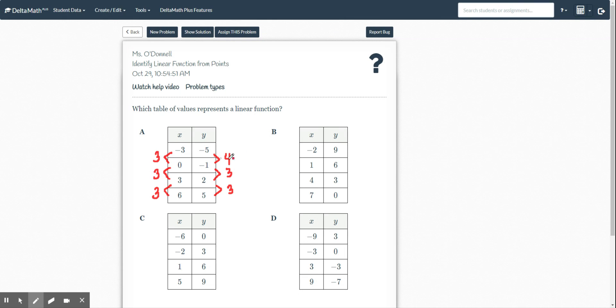Because 4 divided by 3, right? If I do my change in my y's, my change in my x's, and I know to see that slope or that constant rate of change, I take the change in the y's divided by the change in the x's. So I've got 4 over 3, 3 over 3, and 3 over 3. They should give us the same number each time if we have a linear function, and here we have 4 thirds compared to 1 and 1. So A is not linear.